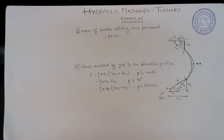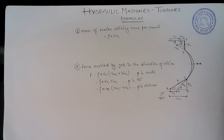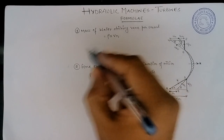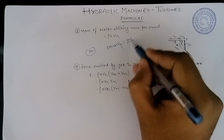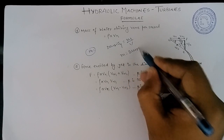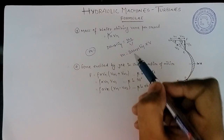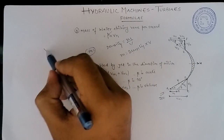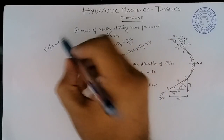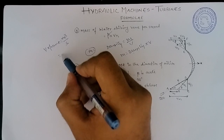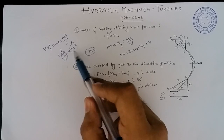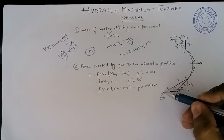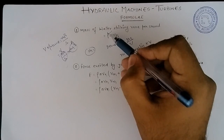The first formula is mass of water striking vane per second. This is the velocity triangle we have seen in the previous video — the logic behind it. Now, mass comes from: density equals mass divided by volume, so mass equals density into volume. The unit of volume per second is meter cube per second, which we can break as meter per second into meter square — that is, velocity into area. This area is the area of the cross section of the jet from where the water is coming.